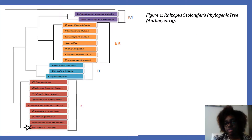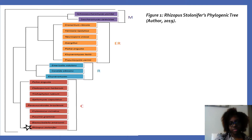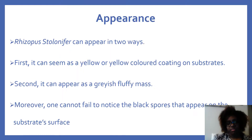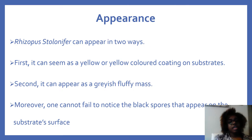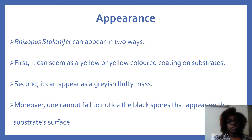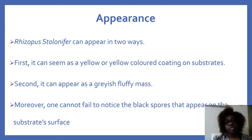This is the phylogenetic tree based on what I explained on the previous slide. They can appear in two ways. First, it can be seen as a yellow colored coating on substrates. Second, it can appear as a grayish fluffy mass. Moreover, one cannot fail to notice the black spores that appear on the substrate's surface.